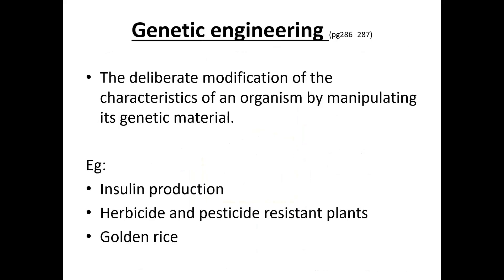Genetic engineering is the deliberate modification of the characteristics of an organism by manipulating its genetic material. Examples include insulin production, herbicide and pesticide resistant plants, and golden rice. It involves the insertion of human genes into bacteria to produce insulin, and the insertion of genes into crop plants for golden rice or herbicide and pesticide resistance.